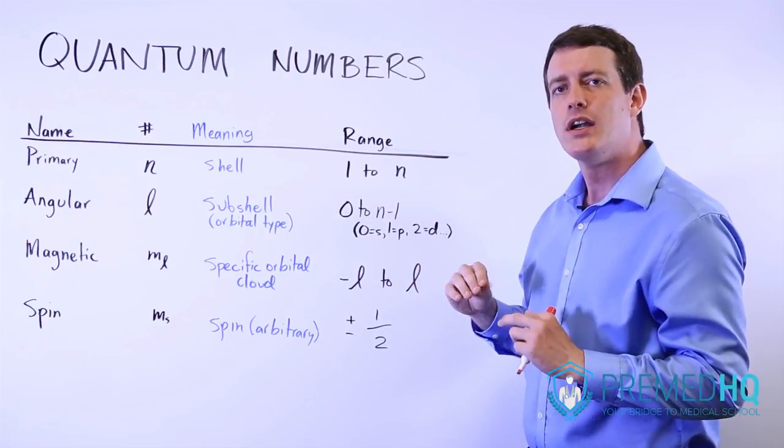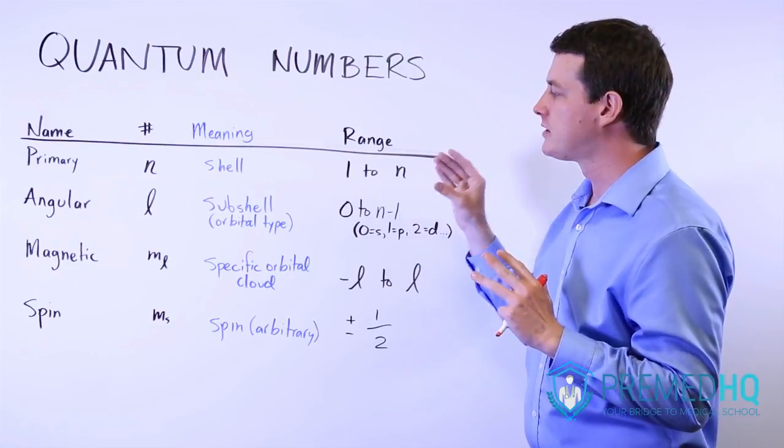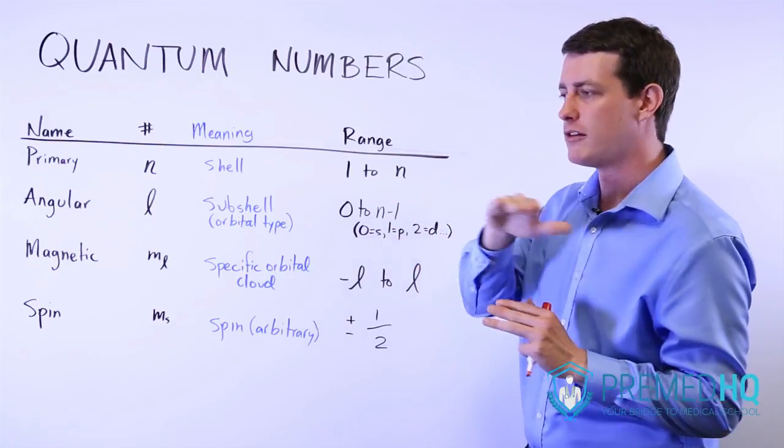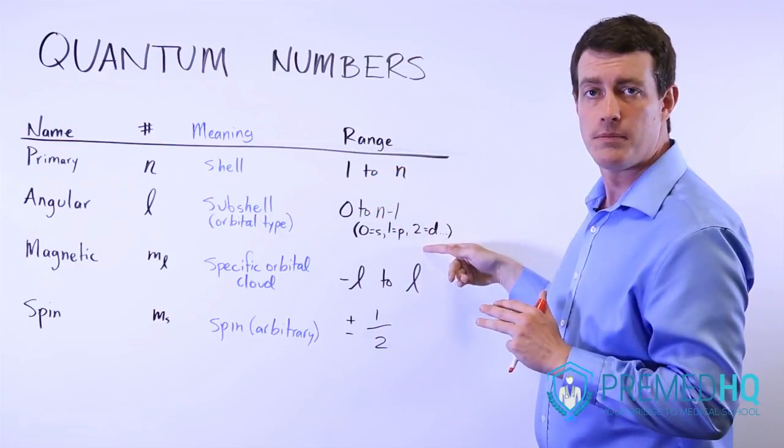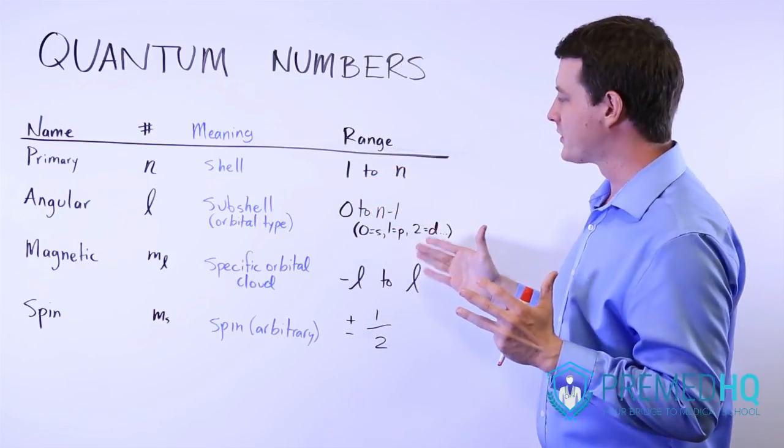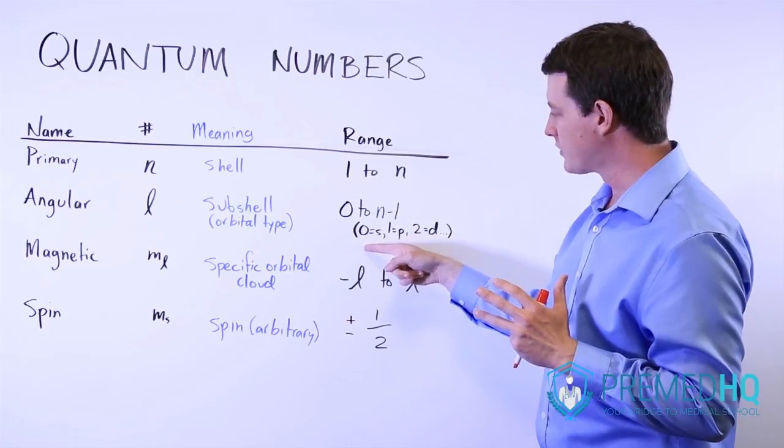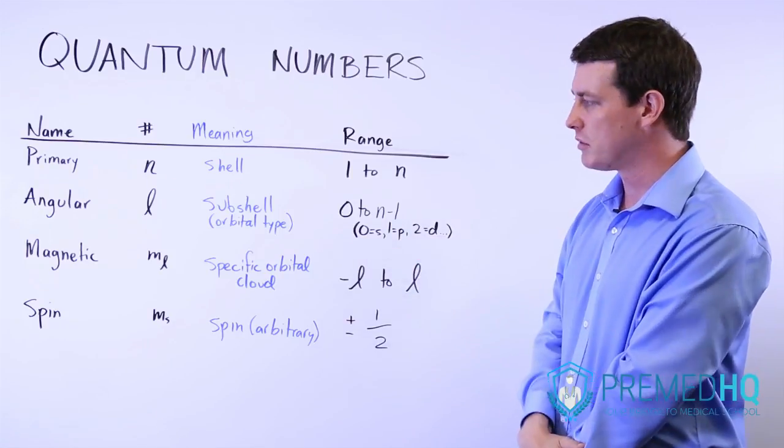So that kind of makes sense, and it tells you that the highest orbital type you can have in something that reaches the 3 shell is going to be a d orbital. But within that atom, you can also have some that are in s orbitals and some that are in p orbitals.